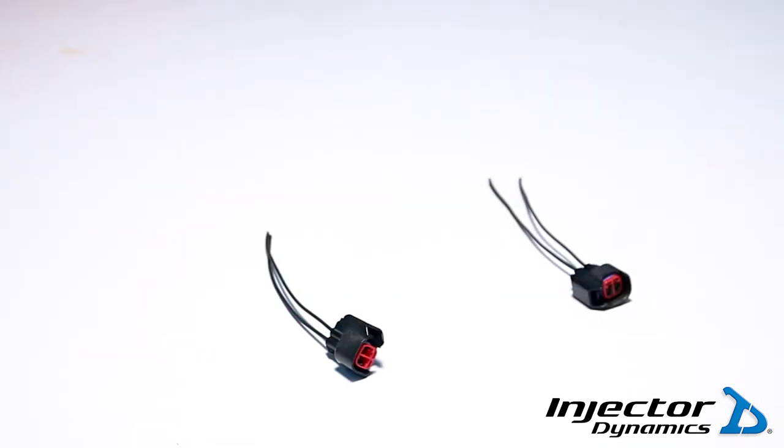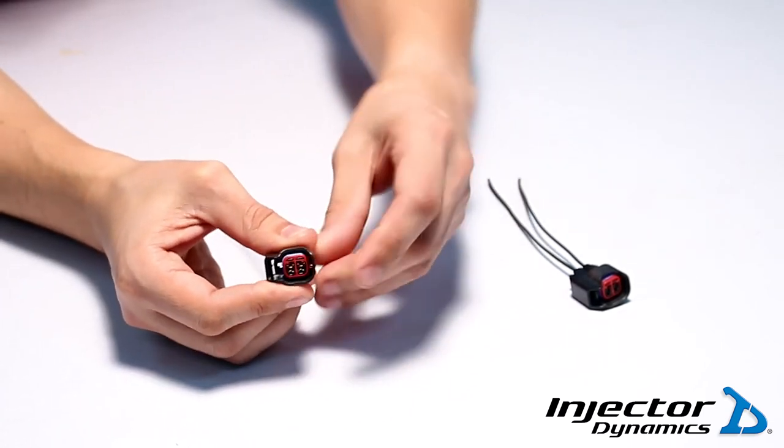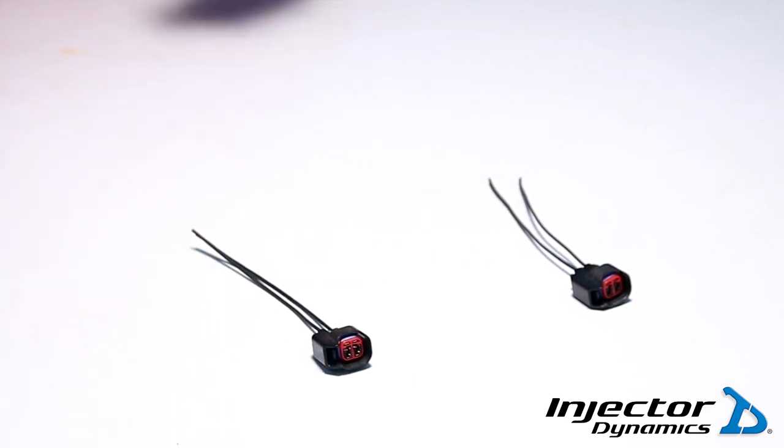The final step on this procedure is to actually lock the terminals into place on the connector body itself. To do so, you'll simply pick it up and press the red lock down into the connector body. Once you hear it pop, check the wire leads and you have a now secured harness.